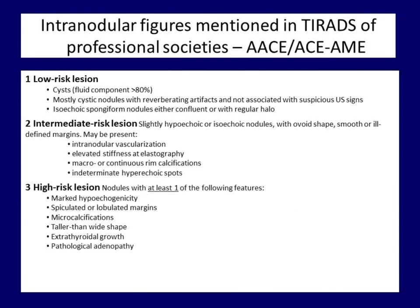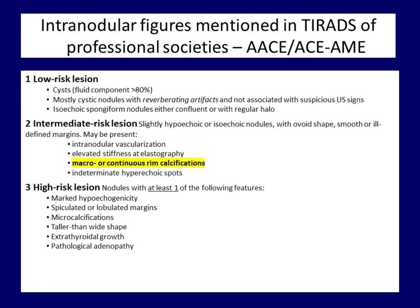First, the TIRADS of the American Association of Clinical Endocrinologists prepared in collaboration with the Italian Thyroid Society. Please pause the video if you are not familiar with the table. Reverberating artifacts and figures occurring in cystic lesions and macrocalcifications are mentioned in the first categories, however they have no role in grouping of the lesion. The situation is similar for macrocalcifications, which are mentioned among characteristics in the intermediate subgroup but do not influence classification. On the other hand, the presence of micro-calcification irrespective of other characteristics means that the lesion belongs to the most suspicious category.